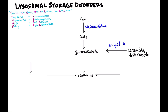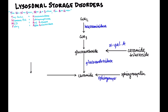To get from glucocerebroside to ceramide, the enzyme is glucocerebrosidase — which makes sense, since enzymes are typically named after what they break down, like tyrosinase or arginase. Another route to ceramide is from sphingomyelin, which is broken down into ceramide through the enzyme sphingomyelinase.